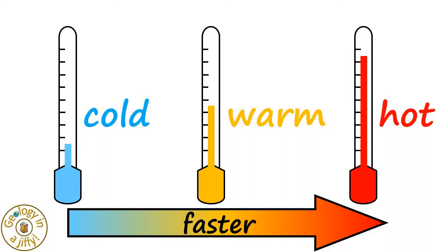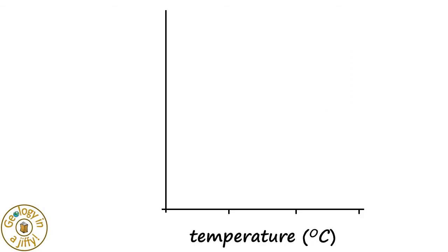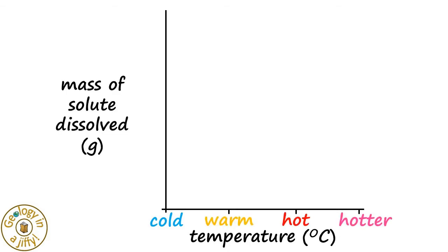We can see this trend using a graph. If we plot temperature on the horizontal x-axis, from cold to warm to hot to hotter, and we plot the mass of the solute that is dissolved up the y-axis, from no solute dissolved to lots of solute dissolved,